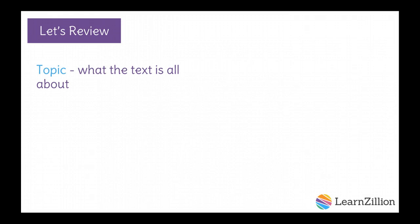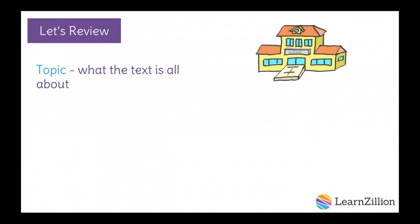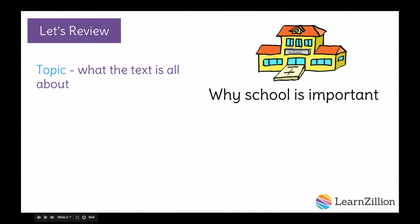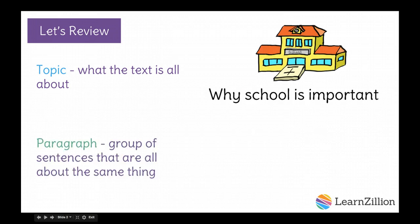The topic is what a text is all about. For example, if you were writing an essay about why school is important, then your topic would be why school is important. A paragraph is a group of sentences that are all about the same thing. In expository writing, paragraphs give more information about a topic.